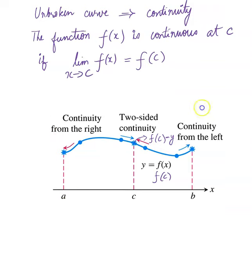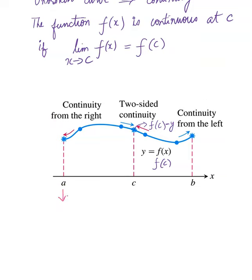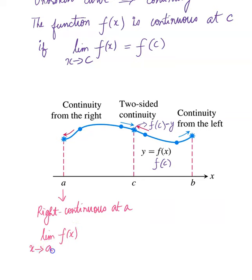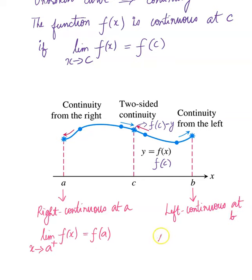If we look at A, it has one-sided continuity — specifically right continuous at A. That means the limit of f(x) as x approaches A from the right, written as A⁺, equals f(A). For B, that will be left continuous at B, written as the limit of f(x) as x approaches B from the left, written B⁻, equals f(B).